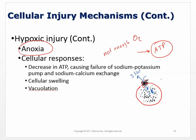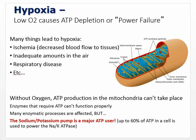Low oxygen causes ATP depletion — a power failure. Without oxygen, ATP production in the mitochondria stops. Without ATP, the sodium-potassium pump can't work. Ischemia is the main cause. Glycolysis can still take place anaerobically — it normally produces pyruvate that moves into the Krebs cycle. But without oxygen, glycolysis produces lactic acid instead of pyruvate, and only 2 ATP rather than the large yield from aerobic respiration.